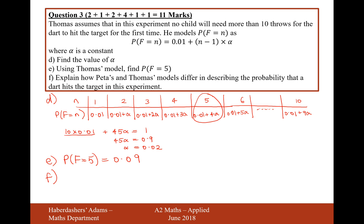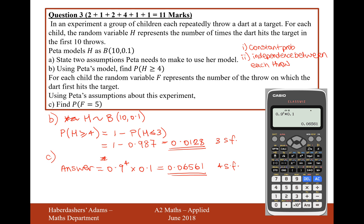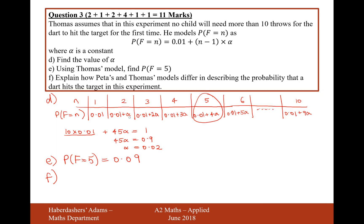And then question F says, explain how Peter's and Thomas' model differ in describing the probability that a dart hits the target in this experiment. Let's have a look at Peter's model. Let's go back to Peter's model back here. Peter's model assumes that every dart thrown has a probability of 0.1 of hitting the dartboard. Whereas in this question here, the probability of hitting the dartboard evidently increases as the child gets more practice.